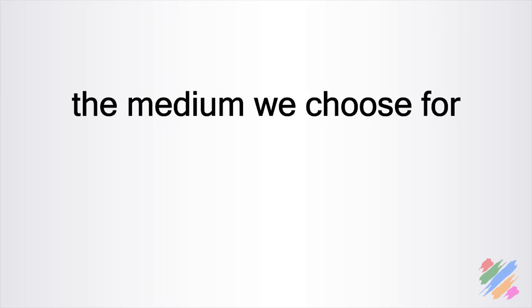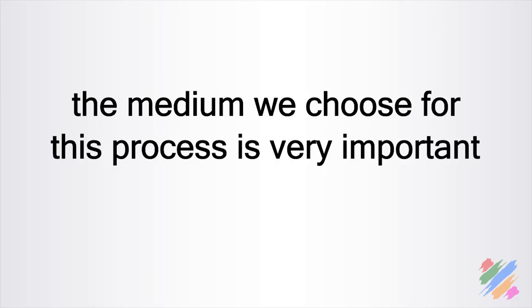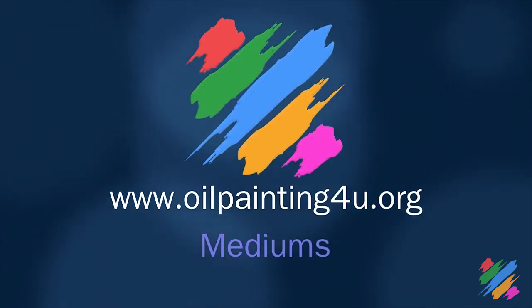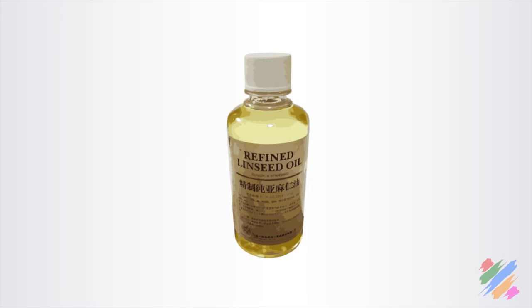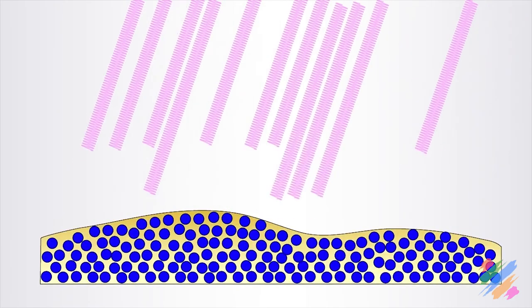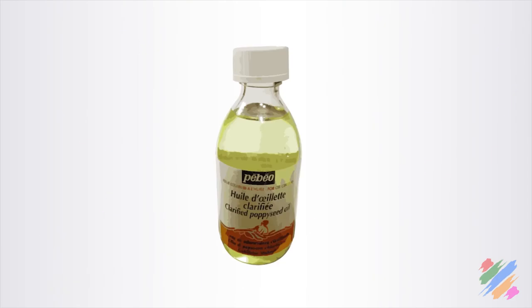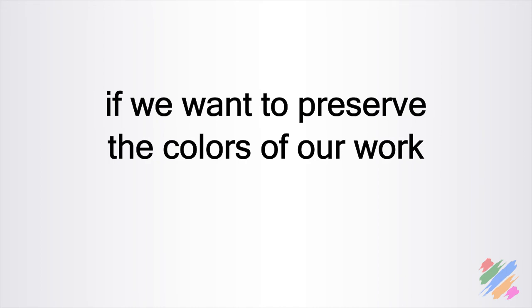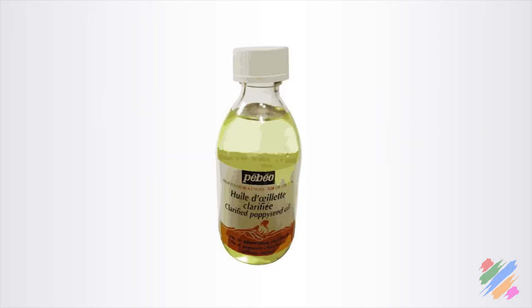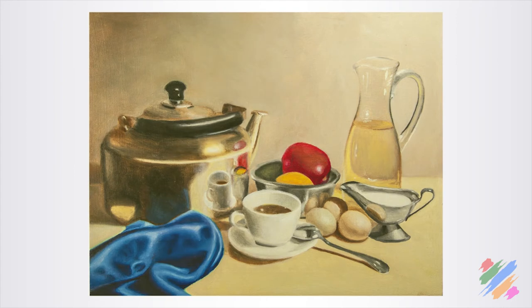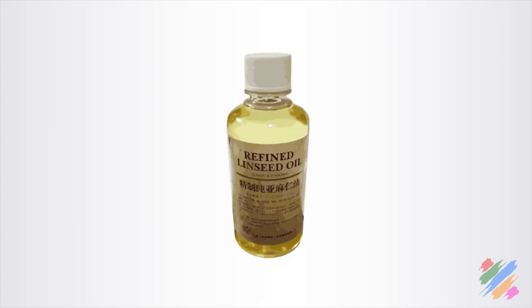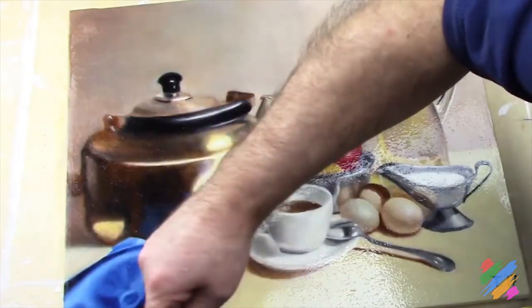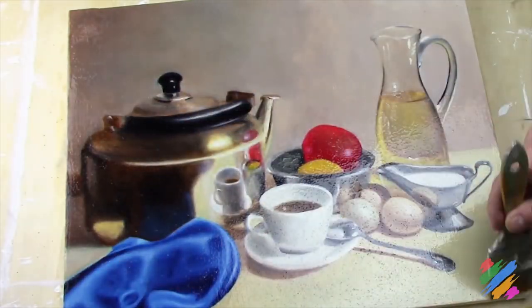The medium we choose for this process is very important, because, as we said when we discussed them, the linseed oil tends to get yellow under the light's effect, while the poppy seed oil is more resistant. If we want to preserve the colors of our work, we should use the poppy seed oil. If we don't mind a light touch of yellow on our paintings, we can choose the linseed one. In this case, we are going to use the linseed oil. We have to repeat this process until the external surface is exactly like we want it.